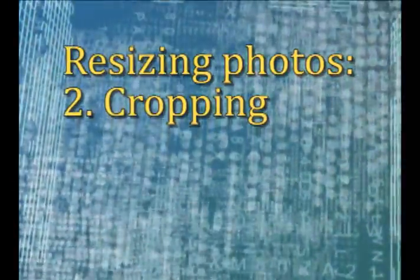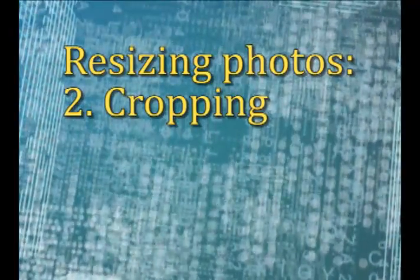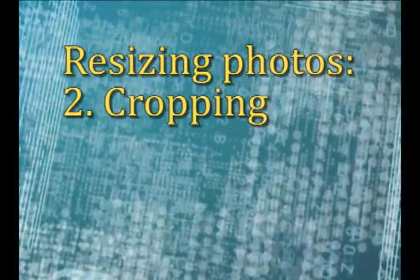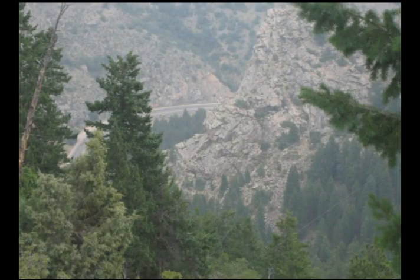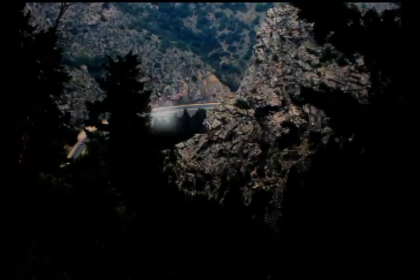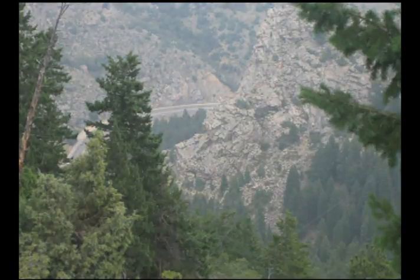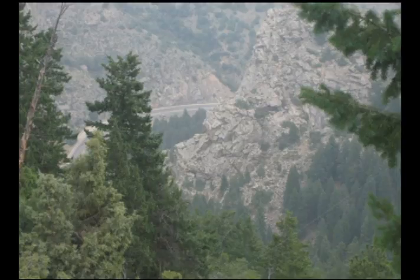Now let's say that you don't want to just smoosh the pixels together, but you want to get rid of extra stuff from the picture. Take this example: imagine that I took this nice photo in the Rockies to show the car on the road there. You can hardly see the car because it's so small in the photo. Resizing this image won't work because making the whole picture smaller causes the car to be practically invisible. What if I got rid of all the mountains and trees?